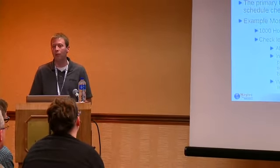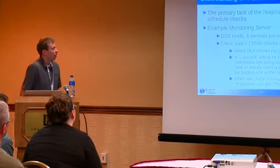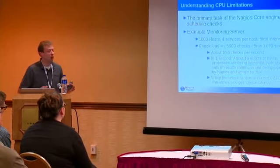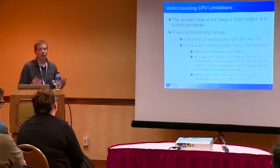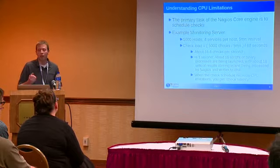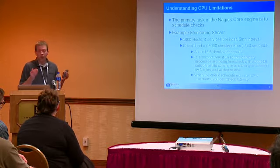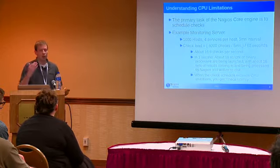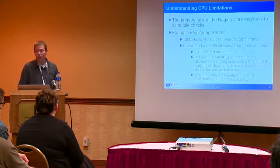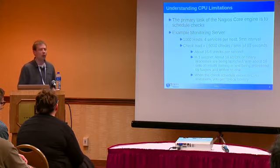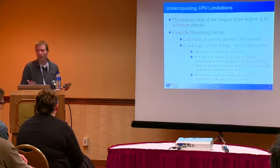Before we dive into the different models, we need to talk about Nagios performance and what affects it. The Nagios core engine is primarily scheduling checks — a mix of binaries and executable scripts. Nagios schedules your checks based on object definitions and how you define the schedule. If you have a check interval of five minutes, it will run that check every single five minutes.